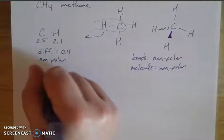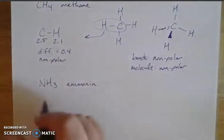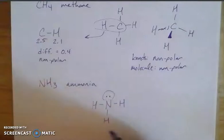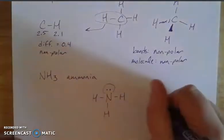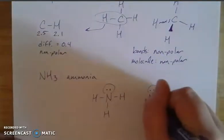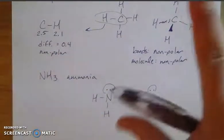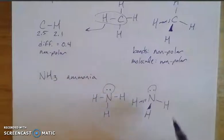Now let's think about ammonia, NH3, which is found in common household cleaners like Windex. Nitrogen has five valence electrons — a lone pair and three bonding sites — and each hydrogen makes one bond. For the VSEPR structure, there are four things around the central atom giving tetrahedral geometry. We draw it like a tetrahedron, but the lone pair takes up slightly more space than an atom, compressing the angle from 109.5 degrees down to 107 degrees, giving us a trigonal pyramidal shape.